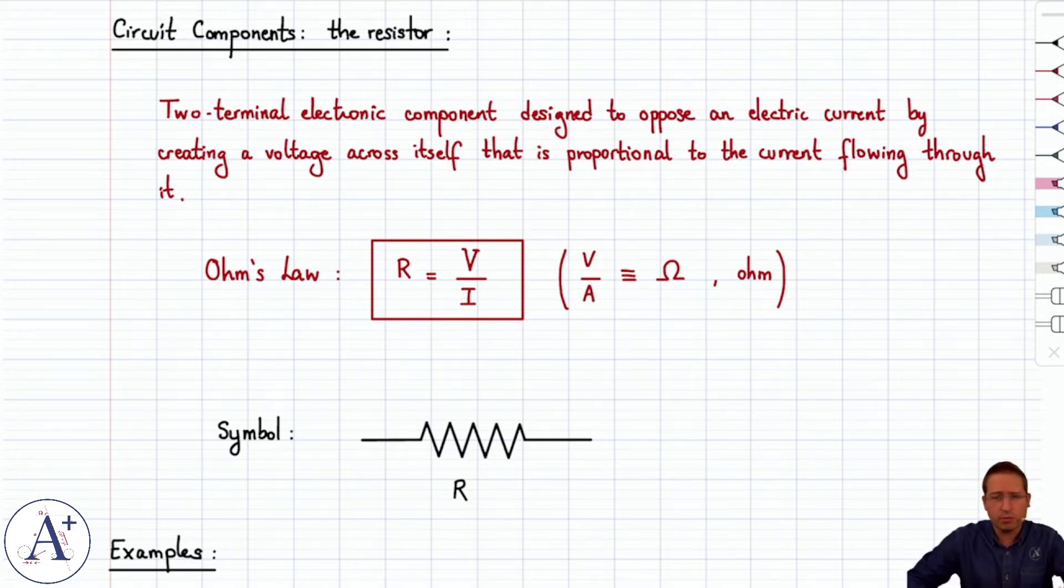This is known as Ohm's law, where the resistance R is equal to the ratio of voltage V across the resistor and the current I going through it. The resistance is expressed in volts per amp, also known as Ohm, denoted by capital Omega.